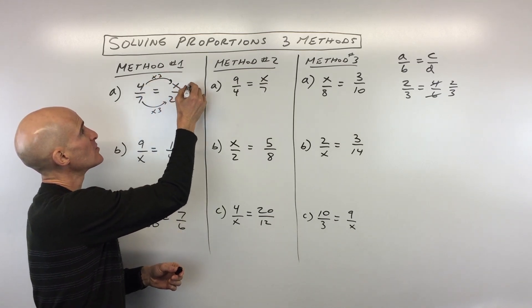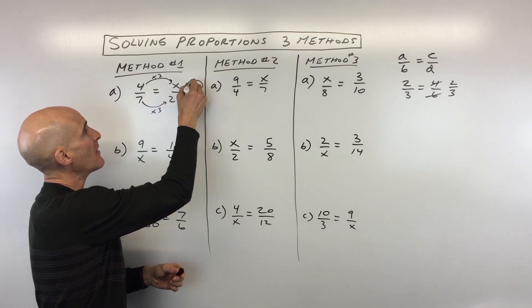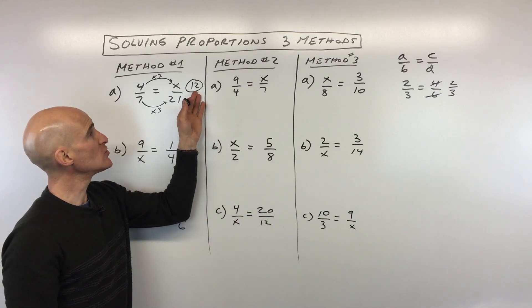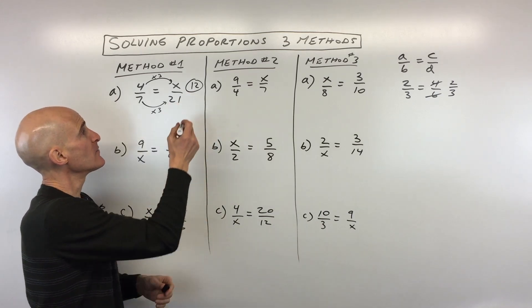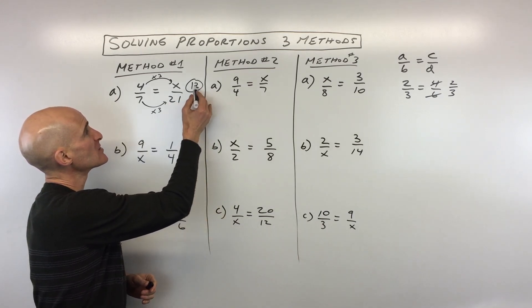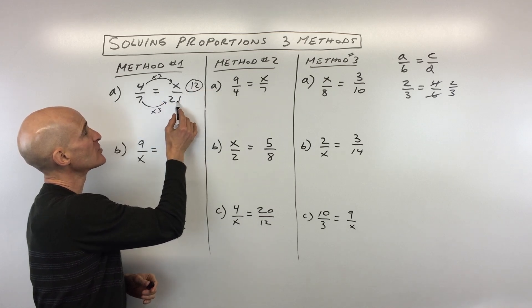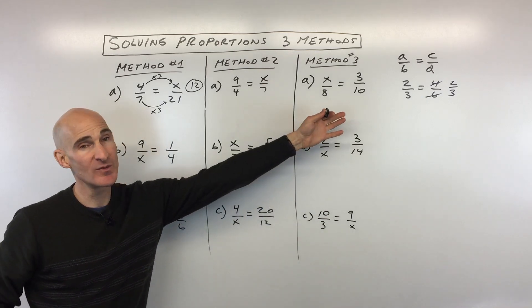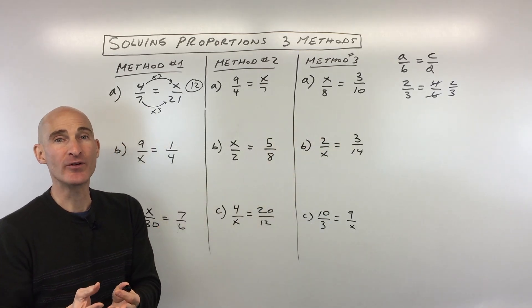So this is going to end up being 4 times 3, which is 12. And that's what x is, that's the unknown quantity. Now, if you're not convinced, you can always reduce this 12 over 21. You can see that 3 goes in here 4 times, and 3 goes into 21 seven times. So when we reduce that fraction, just like we did at the beginning, they're equivalent.